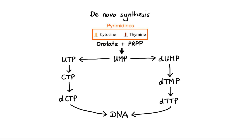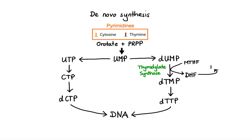It's important to note that thymidylate synthase is a key enzyme that participates in folate metabolism. In order to convert dUMP to dTMP, thymidylate synthase uses methylene tetrahydrofolate as a methyl group donor, resulting in the formation of dihydrofolate, which in turn is reduced to tetrahydrofolate by dihydrofolate reductase. Finally, methylene tetrahydrofolate is regenerated from tetrahydrofolate in a one-carbon transfer reaction.